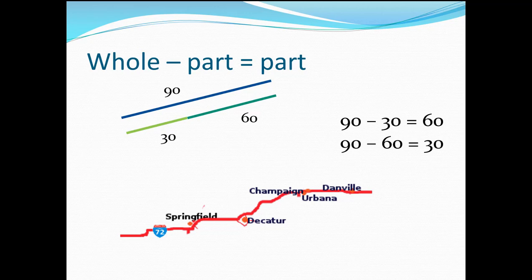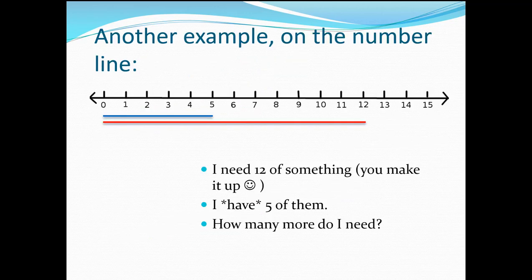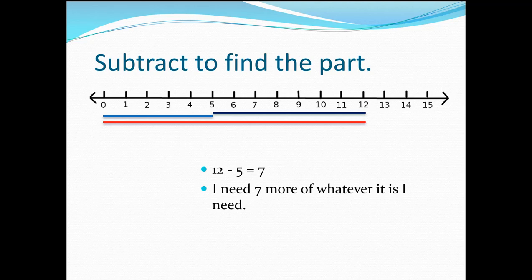90 minus 30 is 60. 90 minus 60 is 30. Another example on the number line. I need 12 of something, you make it up. I have 5 of them. How many more do I need?